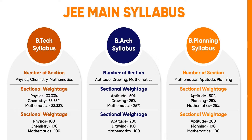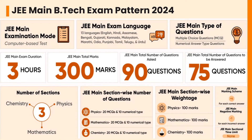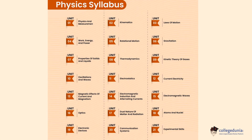The JEE Main B.E. or B.Tech paper is conducted in computer-based test mode with three sections: Physics, Chemistry, and Mathematics. There are 10 numerical answer type questions for all three sections; however, students have the choice to answer any five from each section. Every section has 20 MCQs and all questions must be answered. Each MCQ is awarded four marks if correct, and one mark is deducted for any incorrect answer. Each numerical answer type question is awarded four marks if correct, and zero marks are deducted for any incorrect answer. The total time duration is three hours and the maximum possible marks are 300.